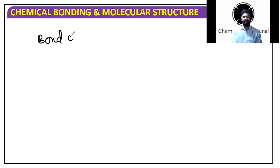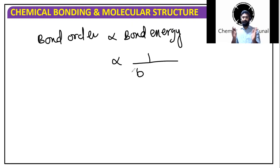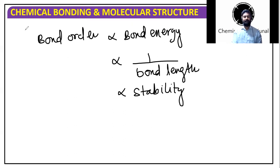Bond order is actually proportional to bond energy. Bond order is proportional to 1 by bond length because we know a longer bond is a weaker bond, a shorter bond is a stronger bond. So bond order is proportional to 1 by bond length and bond order is also proportional to stability.